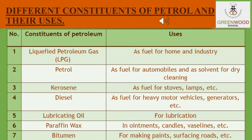Bitumen, the last useful product of petroleum, is used in paints and for road surfacing. Petroleum is also known as black gold because it yields several commercially successful substances. The useful substances obtained from petroleum are called petrochemicals. Petrochemicals are used in manufacturing synthetic fibers such as polyester, nylon, and acrylics, as well as detergents, polythene, and man-made plastics.